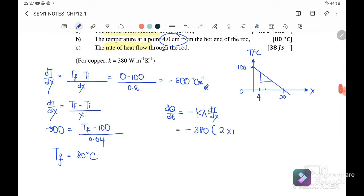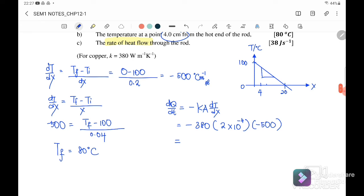We need to convert 2 cm² to 2 times 10 to the power of negative 4 m², and the temperature gradient equals negative 500. So the rate of heat transfer is equal to 38 joule per second or you can write it as 38 watt.